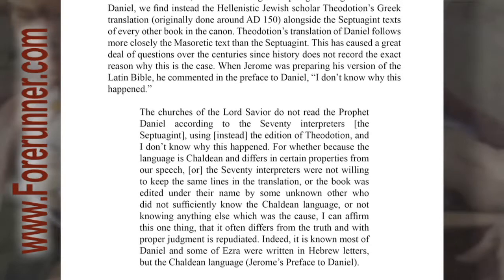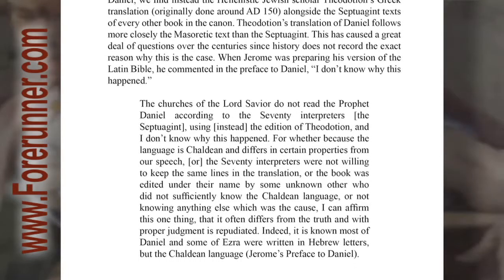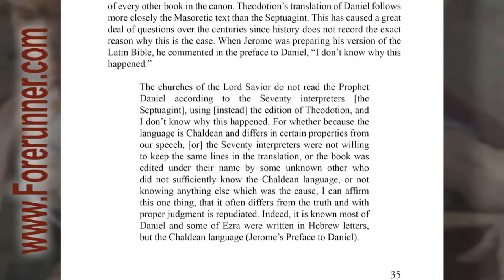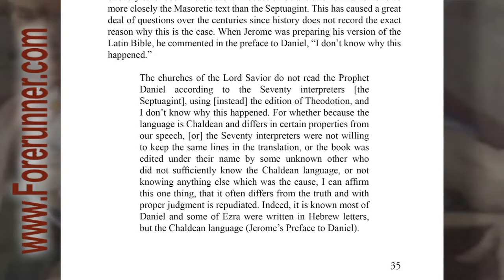When Jerome was preparing his version of the Latin Bible, he commented in the preface to Daniel: "The churches of the Lord's Savior do not read the prophet Daniel according to the 70 interpreters — the Septuagint — using instead the edition of Theodotion. And I don't know why this happened. For whether because the language is Chaldean and differs in certain properties from our speech, or the 70 interpreters were not willing to keep the same lines in the translation, or the book was edited under their name by some unknown other who did not sufficiently know the Chaldean language, or not knowing anything else which was the cause, I can affirm this one thing: that it often differs from the truth and with proper judgment is repudiated. Indeed, it is known most of Daniel and some of Ezra were written in Hebrew letters but the Chaldean language." Jerome's Preface to Daniel.